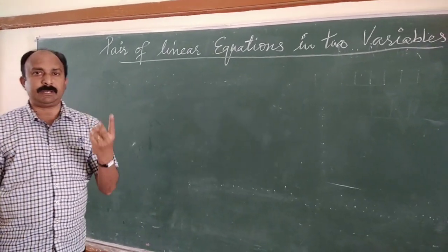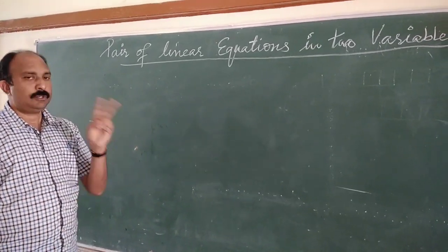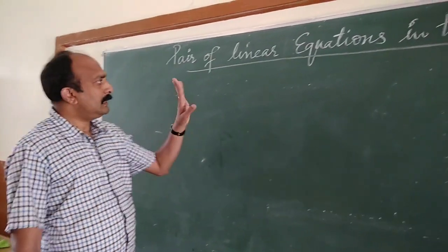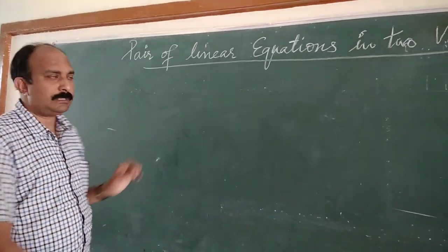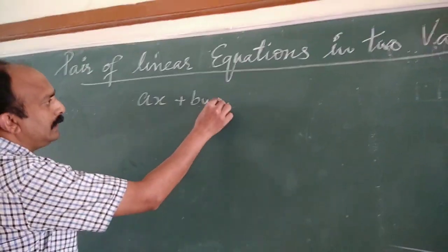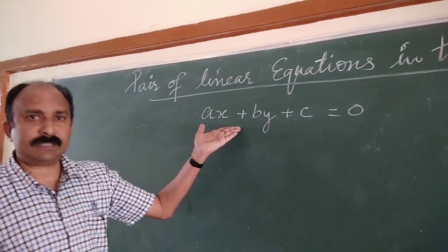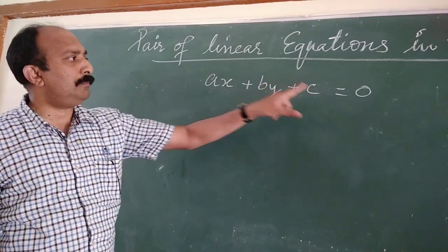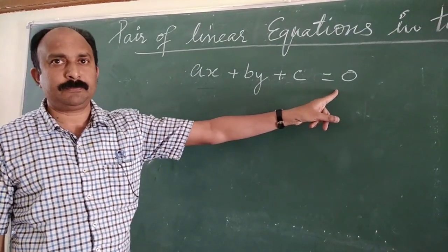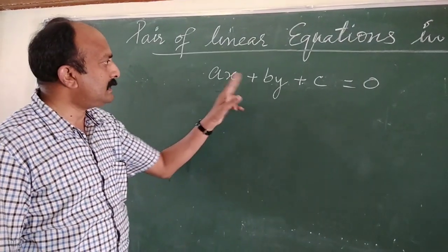I think all of you know what is meant by pair — pair means 2. So this time we will be seeing two linear equations at a time. As you all know, the standard form of a linear equation in two variables is Ax plus By plus C equal to 0, where A, B, C are the constants and X and Y are the variables. This was already taught in Class 9.